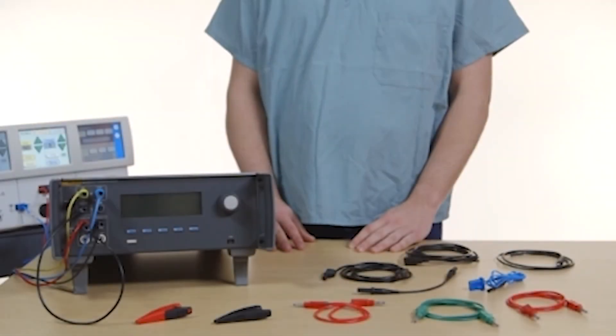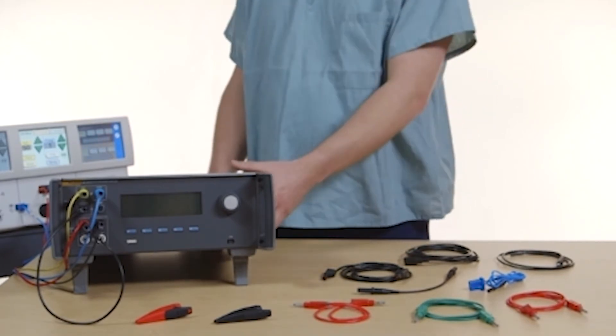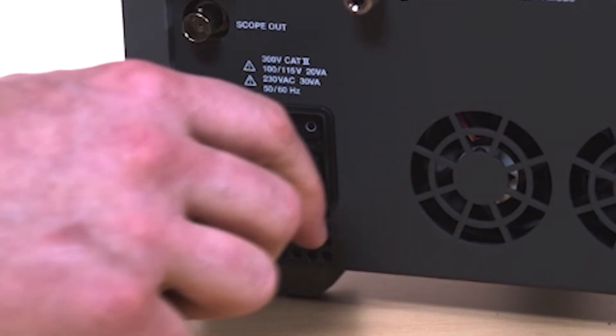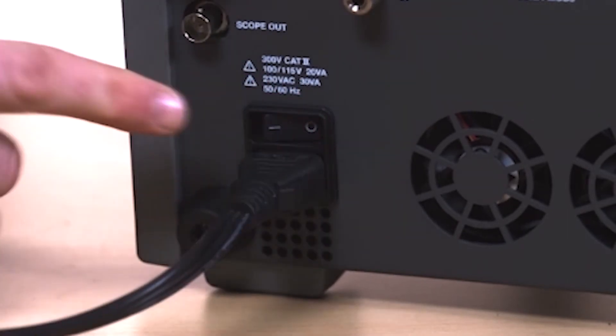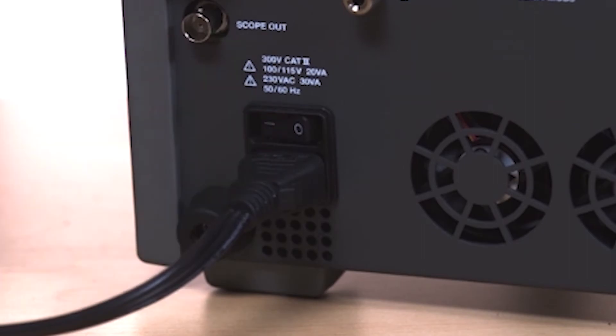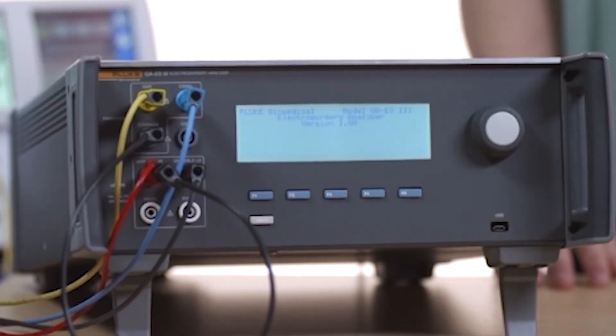Let's run some tests to show how the QAES3 is used to test an electrosurgical unit or ESU. First, connect the power cord to the main power on the back of the QAES3 and turn on the power. The startup sequence will automatically begin.